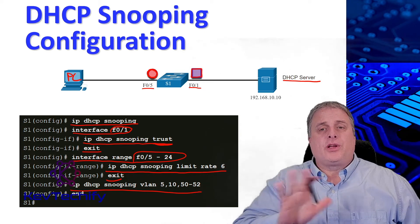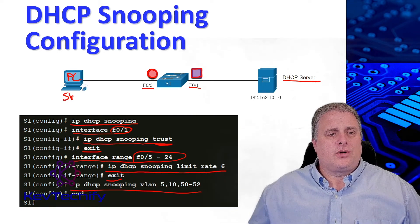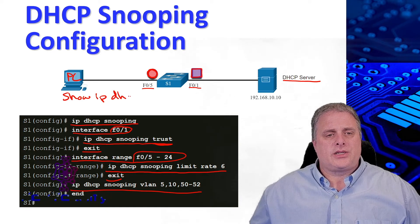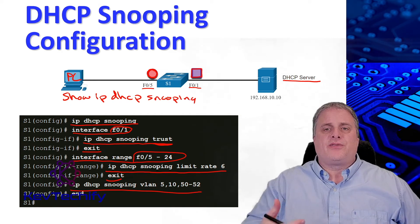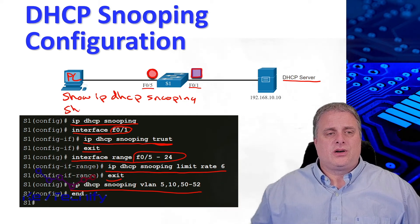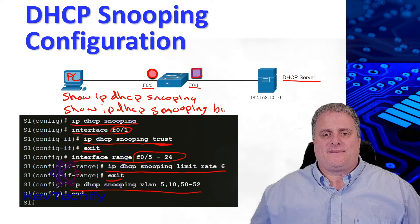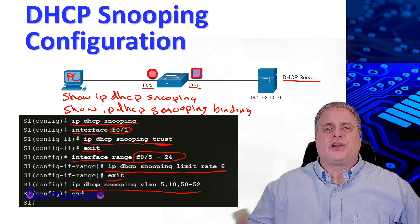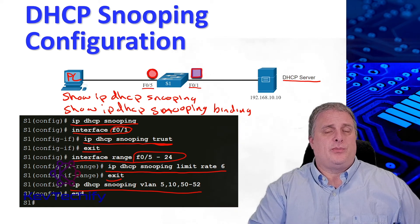A couple of commands to verify that IP DHCP snooping is working: the first is show IP DHCP snooping, which verifies that DHCP snooping is turned on and working. The second is show IP DHCP snooping binding, which displays the clients that have received DHCP information. These two show commands help verify your DHCP snooping configuration.